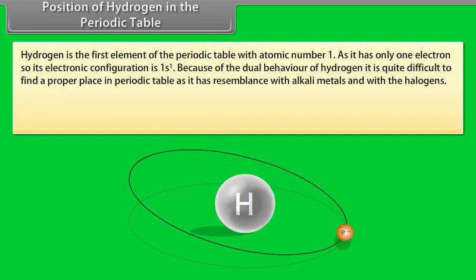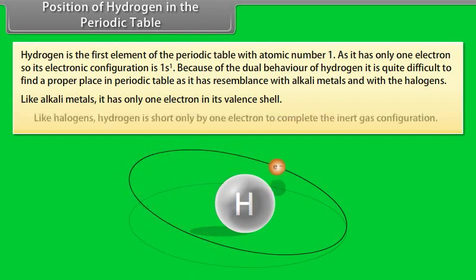It has resemblance with alkali metals and with the halogens. Like alkali metals, it has only one electron in its valence shell. Like halogens, hydrogen is short only by one electron to complete the inert gas configuration.